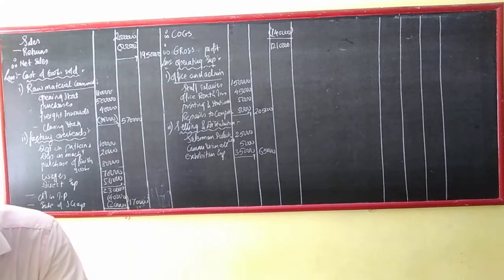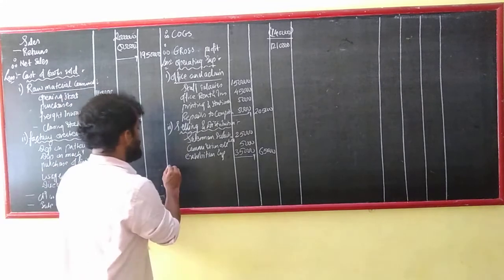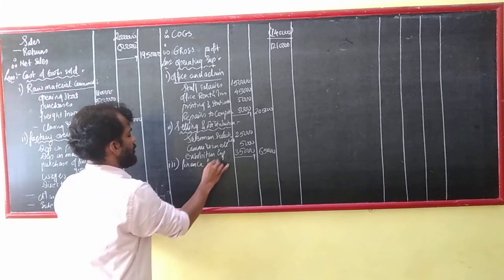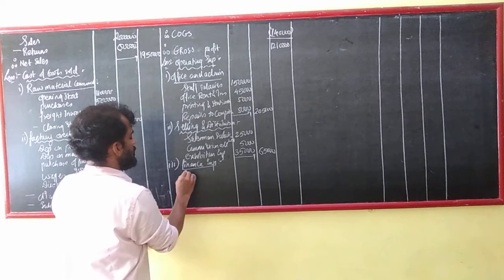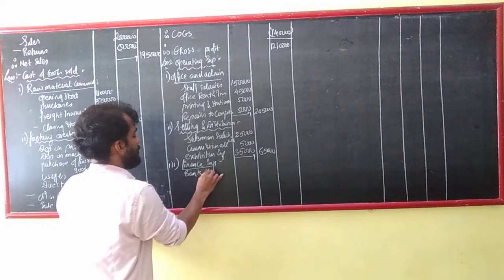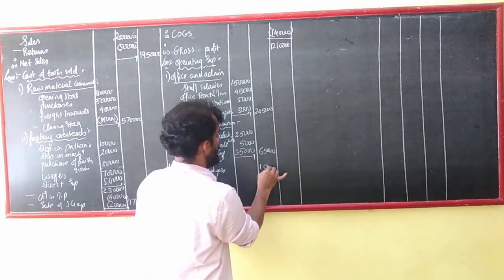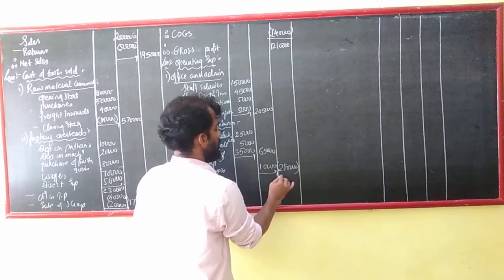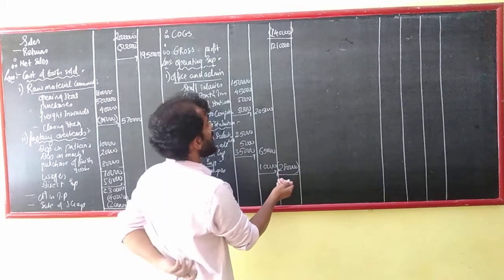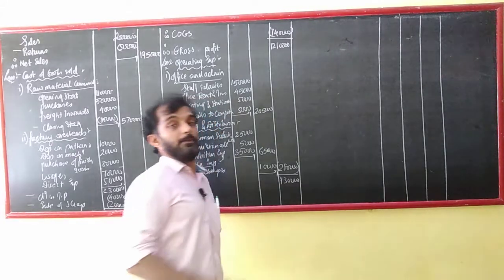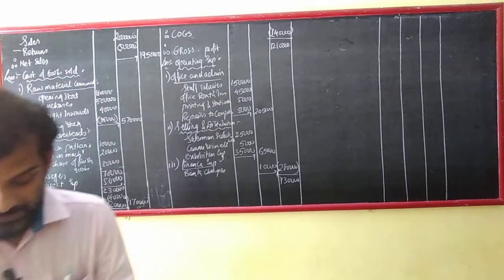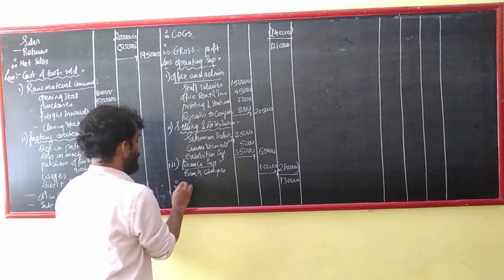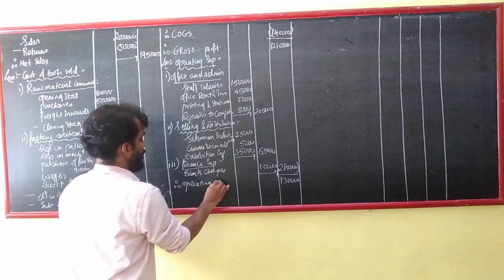Bank charges — if you remember — go under finance expenses. Finance charges: 10,000. So 2,70,000 plus 10,000. We also have depreciation of 10,000 and 20,000. The cost comes to 16,000. Total operating expenses are now calculated.